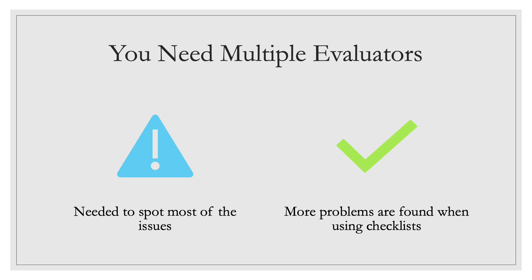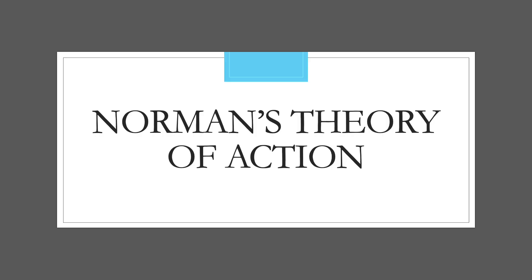Something to remember when conducting a heuristic evaluation, especially in a professional environment, is that you will likely need multiple evaluators. There are two reasons for this: first, it will likely take multiple people to spot most of the issues — it is unlikely for one person alone to spot them all. And second, more problems are found when using checklists, so having multiple evaluators with a checklist of things to look for will help you catch more errors.